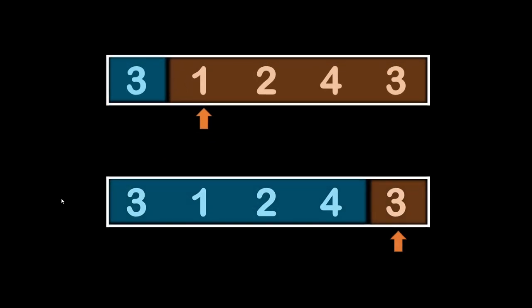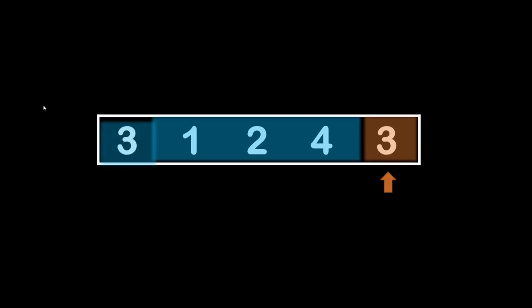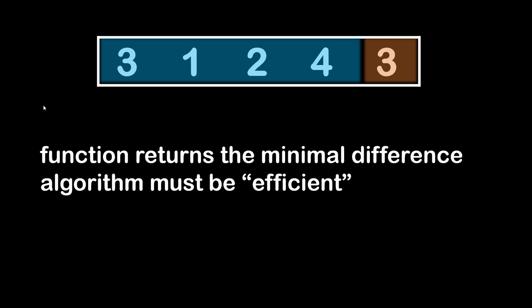We can notice we have two edge cases: the starting position at the first element where you have only one element in the left sum, and the other edge case when the position is at the end of the array where you have only one element in the right sum. The function should move the separating position, check all the absolute differences between SL and SR, and return the minimal difference found. It is stated by Codility that the algorithm must be efficient, and usually when they specify that, any brute force solutions are most likely not going to give you a 100% score.